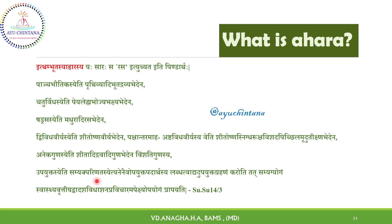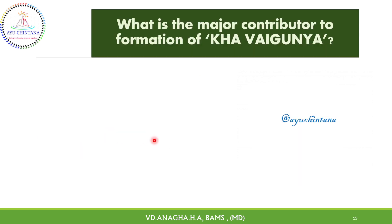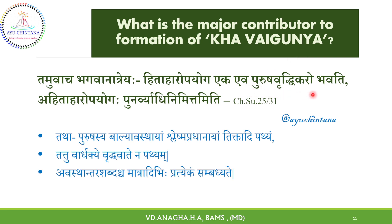If this Ahara establishes the Prakriti through Doshas in Samasthiti and brings the Vishamaddhatus to their respective abodes, i.e. Samigarana, then it is called Hita Ahara. If Ahara neither stabilizes the Samadhatu nor reroutes the Vishamaddhatus, it should be recognized as Ahita Ahara. Only Hita Ahara is the reason for Purusha Vritti, i.e. growth and development, while Ahita Ahara results in Vyadhi.